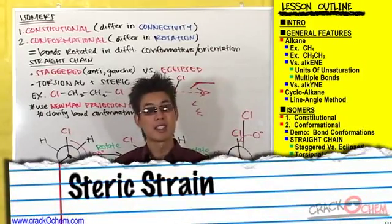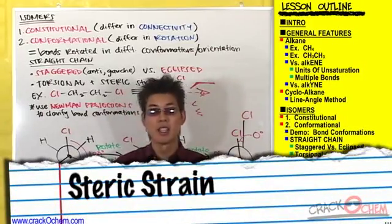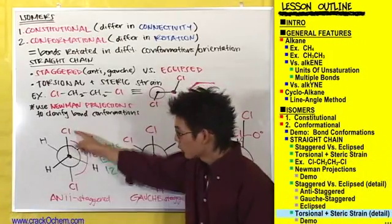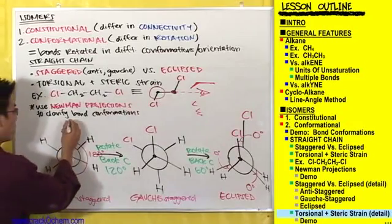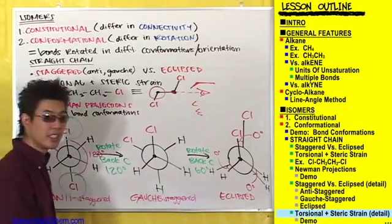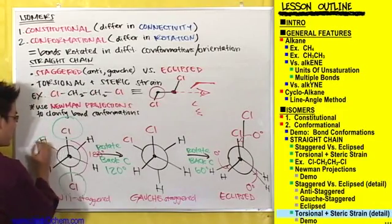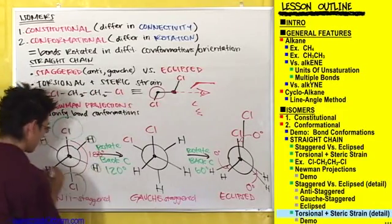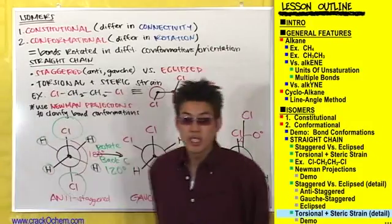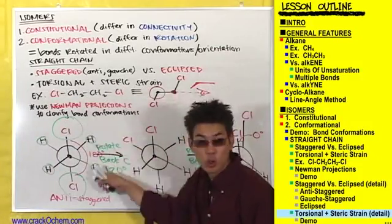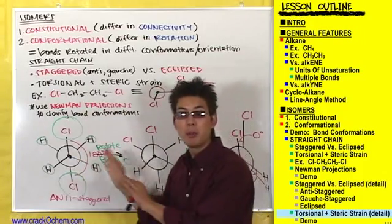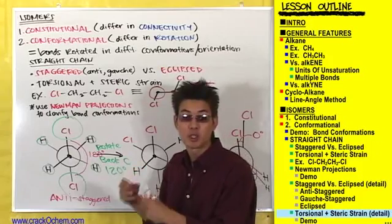Every atom has a size — it has a mass, and some atoms are bigger than others. For example, these chlorines are much bigger compared to these hydrogens. When these big substituents — these chlorines — are as far away from each other as possible, they don't bump into each other. They don't invade each other's space.